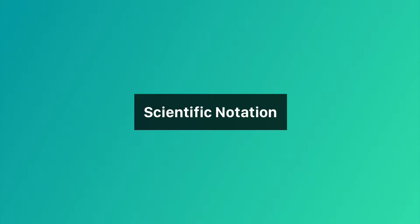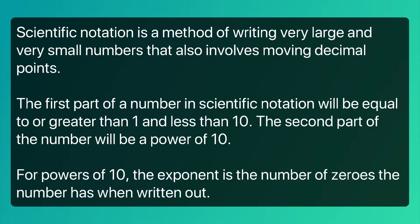Scientific notation is a method of writing very large and very small numbers that also involves moving decimal points. The first part of a number in scientific notation will be equal to or greater than 1 and less than 10. The second part of the number will be a power of 10.